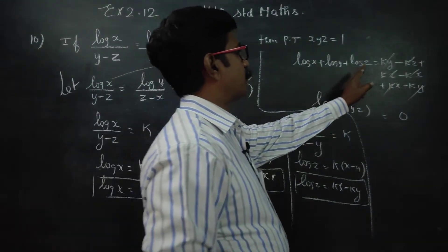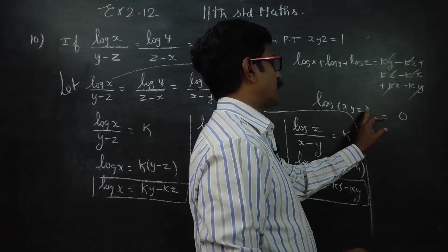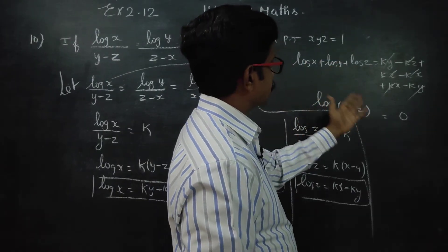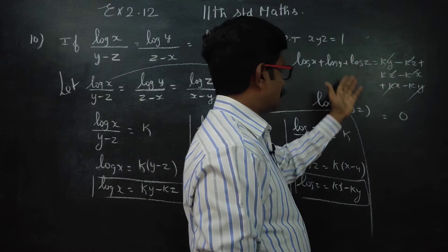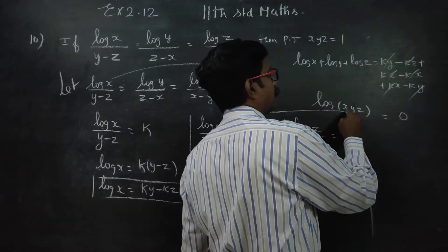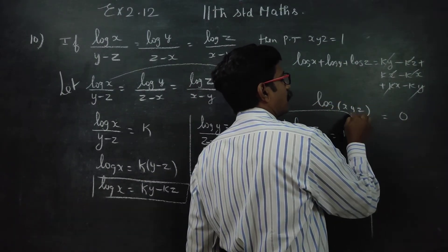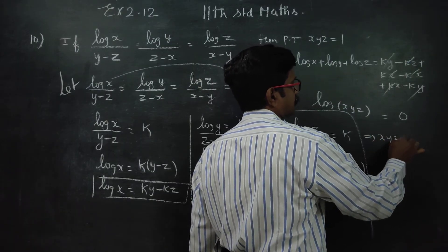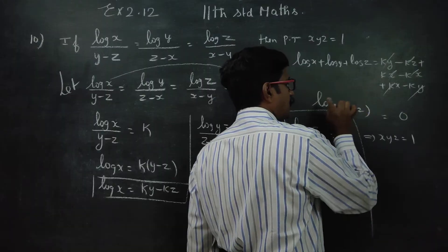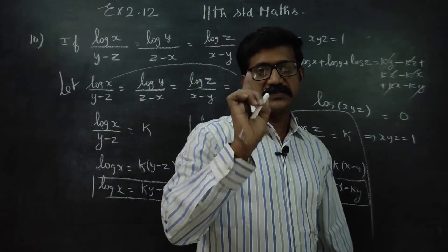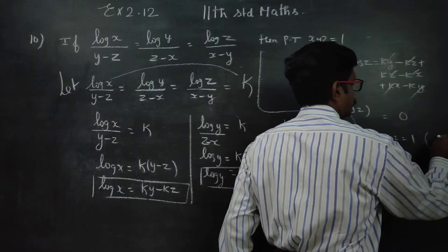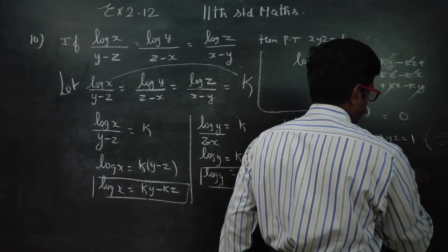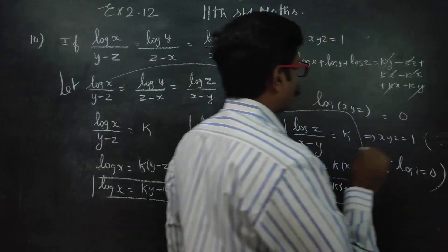So log x plus log y plus log z equals log(xyz) by the product rule — log(abc) equals log a plus log b plus log c. This value equals 0, and since log 1 is always 0, this implies xyz equals 1.